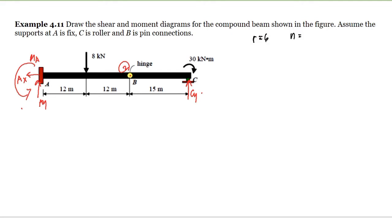The number of members is two since this is a compound beam. Using the formula R should be equal to 3N, our reaction is 6 and 3 times 2 equals 6. So 6 equals 6. This is statically determinate.